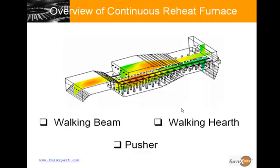Reheat furnaces are used in steel and aluminum mills to raise the temperatures of steel and aluminum billets, slabs, and ingots known as charge or products from ambient to an appropriate rolling temperature. There are various types of continuous reheat furnaces. The most common are walking beam type, the walking hearth type, and the pusher type.